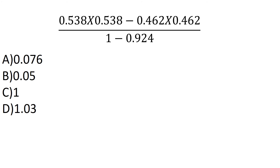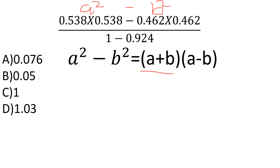So these are the options. This is the format. If you take a look at the format, it will be easy to solve. You have to use the equation. This problem will take about 10 seconds. This is the A squared minus B squared formula, which gives A plus B and A minus B.